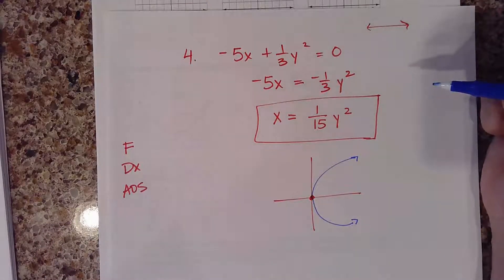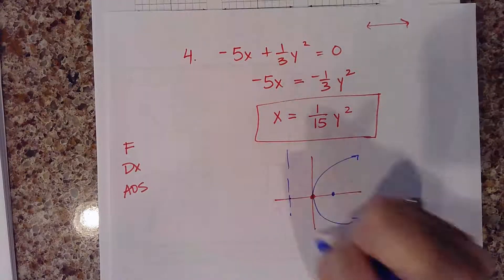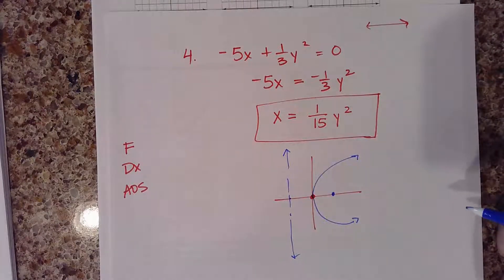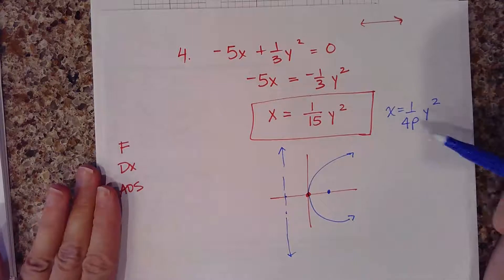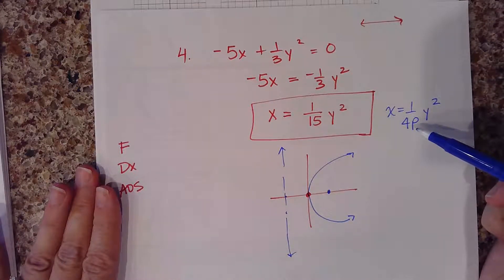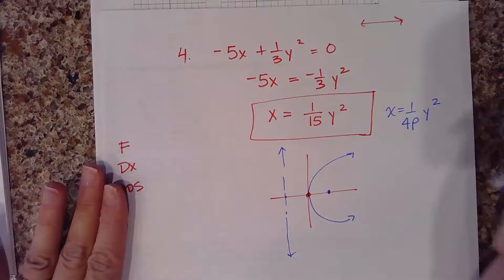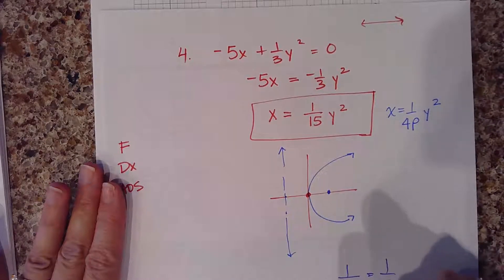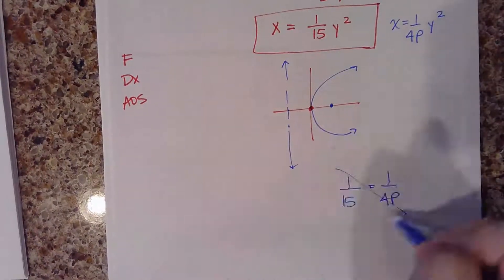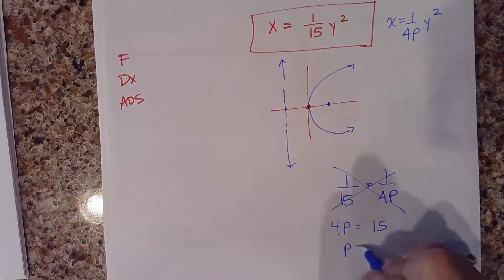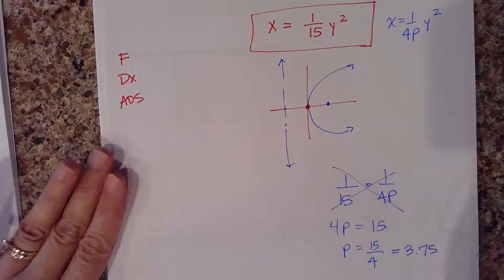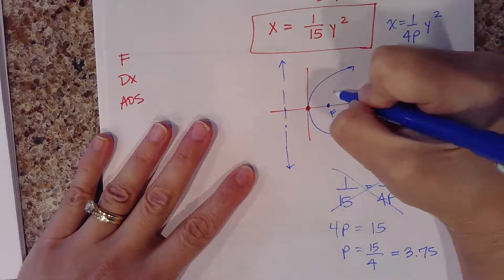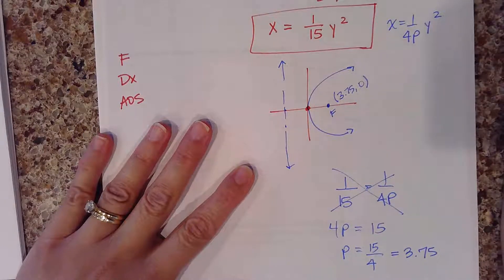I need to figure out the p distance since I know my focus is to the right and my directrix is to the left. The general equation is x equals 1 over 4p times y squared. I set 1/15 equal to 1 over 4p and cross-multiply to get p equals 15/4, which as a decimal is 3.75. So my focus is at the point (3.75, 0) — or written as a fraction, (15/4, 0).